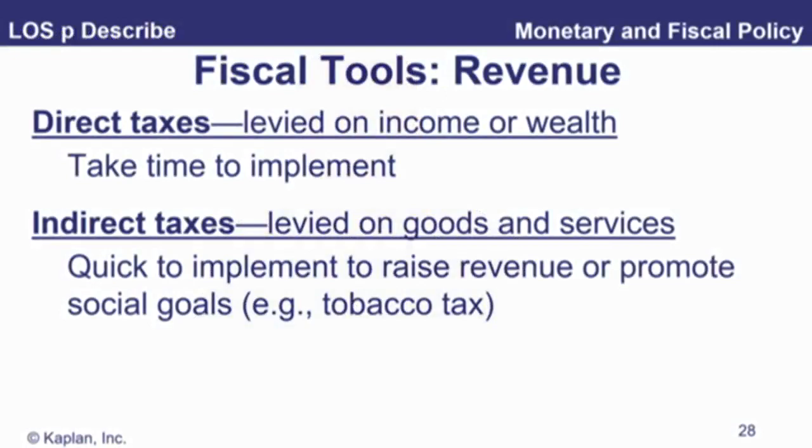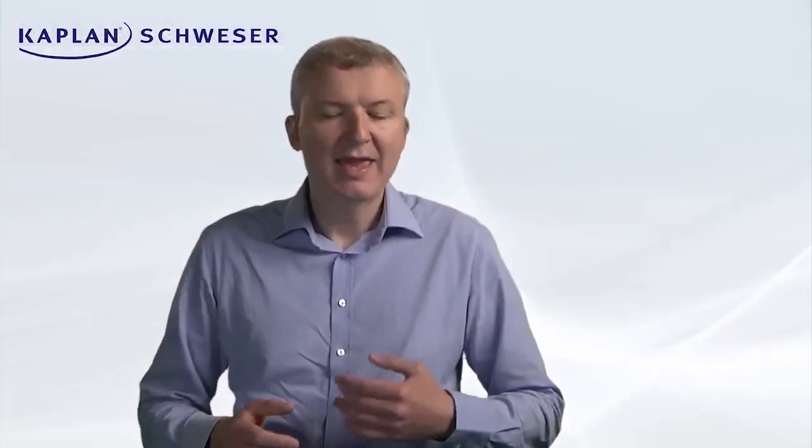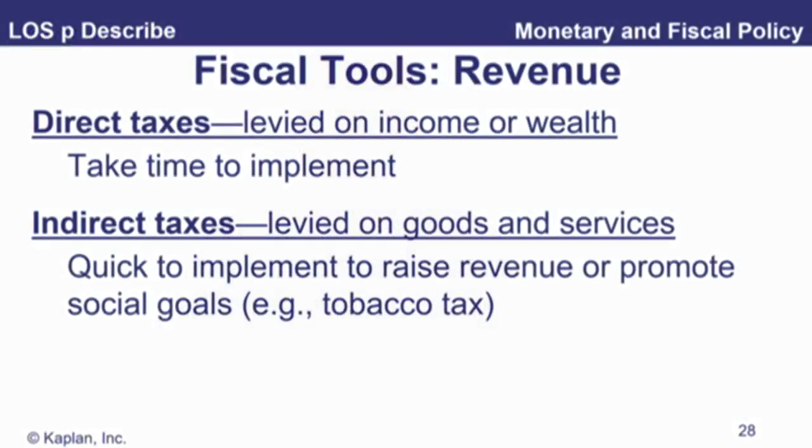Obviously, the benefit of capital spending is you are going to hopefully increase future GDP. Those are our spending tools. The other side is taxation: direct and indirect. A direct tax takes time to implement — getting the rules changed on income or wealth taxes is obviously a lengthy, potentially lengthy, political process. Indirect taxes on goods and services are very quick to implement to raise revenue — you can just put a tax on tobacco or alcohol straight away and start to bring in revenue.